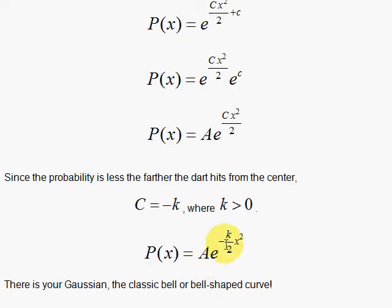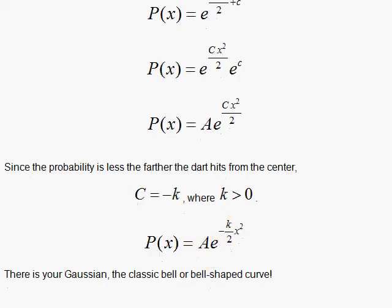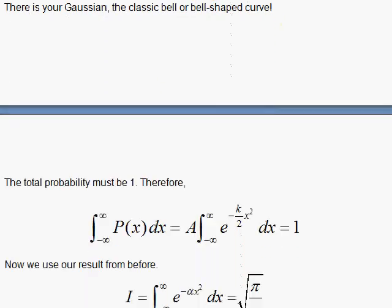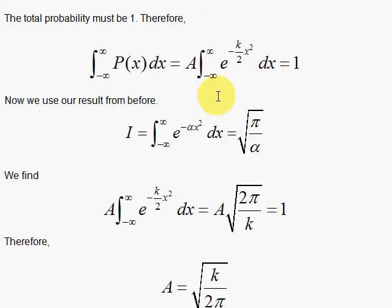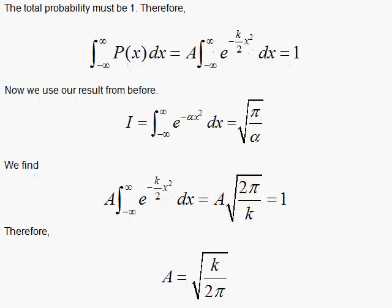We're going to work to find out what A is and get some insight as to what k represents. We do this by normalization. The probability when we integrate over all the values of x must be one, so we set this up to solve for A. Notice that one of our integrals introduced earlier is needed here with alpha as k over 2. This integral becomes 2 over k inside that square root, and that's our result. We can solve for A, which gives us our normalization constant.